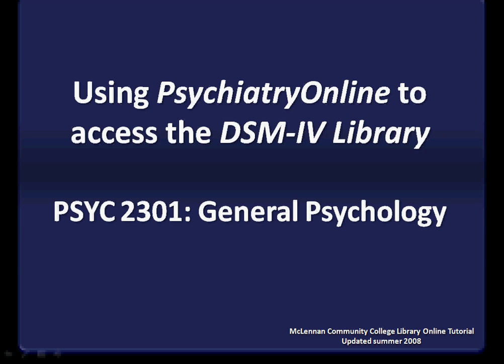This is part 3 in a series of tutorials for Psych 2301 General Psychology. This tutorial covers using Psychiatry Online to access the DSM-IV library, and at the end I will also point out how you can get the DSM in hard copy.